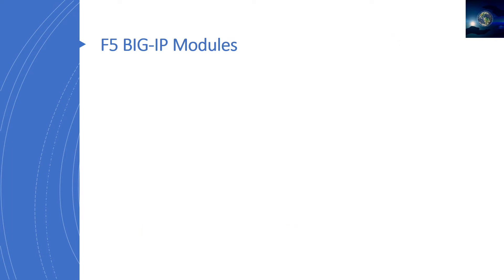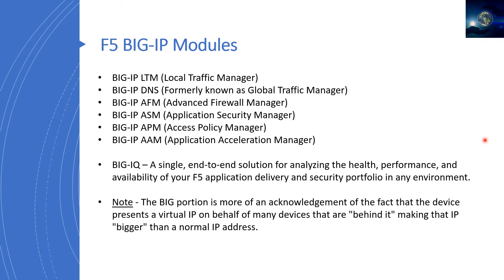Let's have a look at the F5 Big-IP modules. F5 offers a lot of modules. The first is Big-IP LTM, the Local Traffic Manager, which is used for local load balancing within a network and offers caching, compression, and TCP acceleration. It's based on a full proxy architecture. Big-IP LTM is also the product we are going to discuss throughout this series, and we'll see where it falls in the F5 certification path.